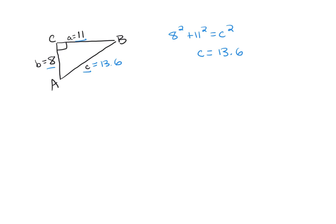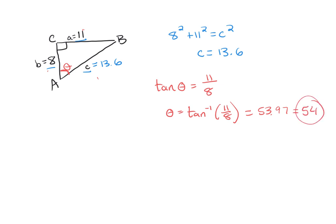Now let's find an angle measure — let's find angle A. We can use any of the trig functions since we have all three sides, but let's use tangent: tan of theta equals opposite over adjacent, which is 11 over 8. Therefore theta equals the inverse tan of 11/8, and when you do that you get 53.97 degrees — rounding to the nearest whole number, that's 54 degrees. For the last angle, 90 plus 54 plus B has to equal 180, so angle B is 36 degrees.